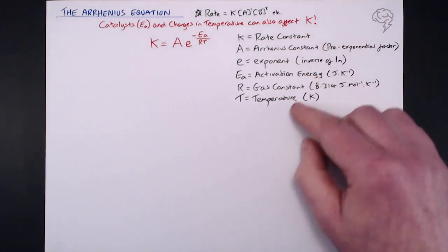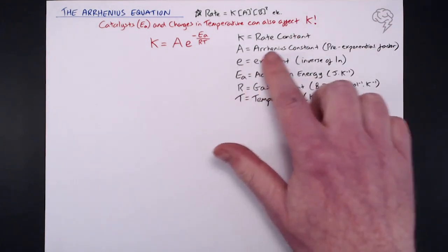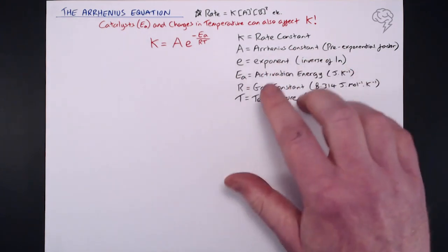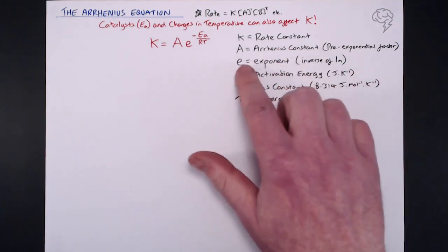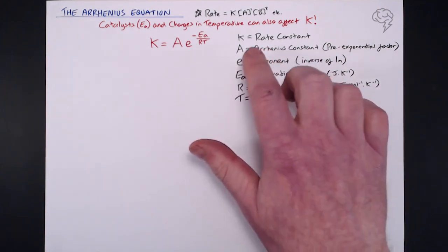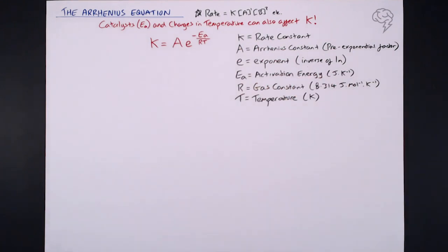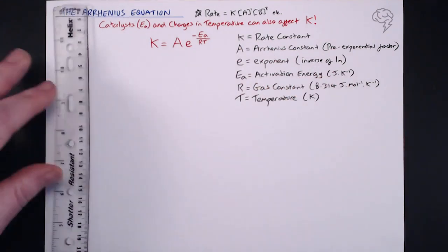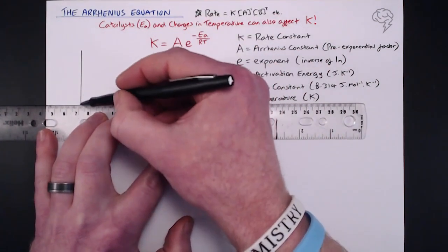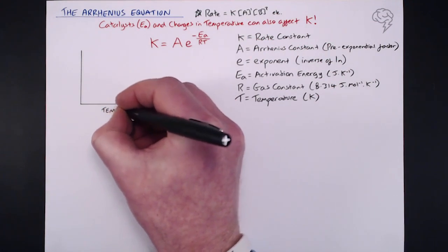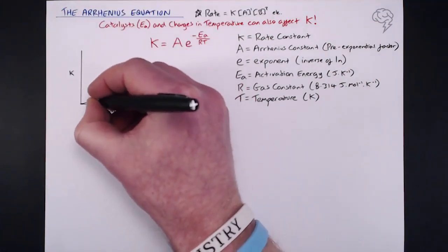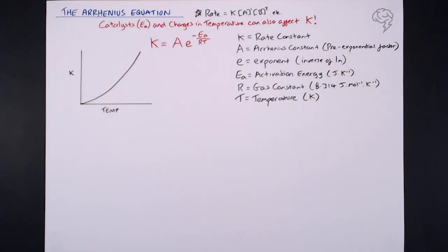Looking at how all these things are put together — I want to talk about this exponent. This really comes into play because there's a particular relationship between temperature and our rate constant K. If we sketch a graph of temperature against K, we can see an exponential relationship: if we increase temperature, K increases exponentially. That's why we have to put this exponent into our equation — that's the reason why that little e is in there, the inverse of natural log.